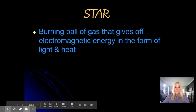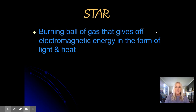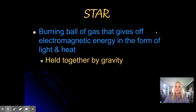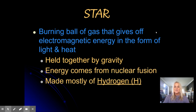A burning ball of gas — well, what kind of gas? As you know, there are three states of matter: solid, liquid, and gas. But it goes beyond the scope of that. The gas that the sun is composed of is hydrogen gas held together by gravity. And it's not even really gas — it's plasma, because the sun is superheated.